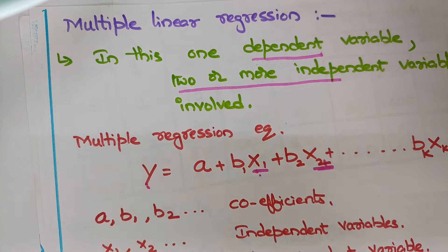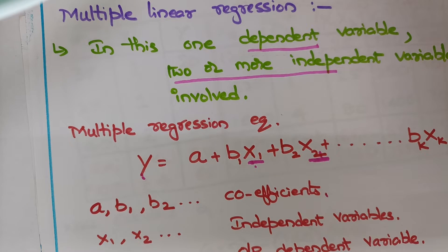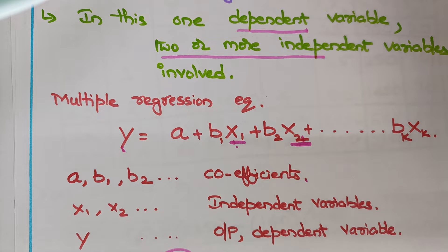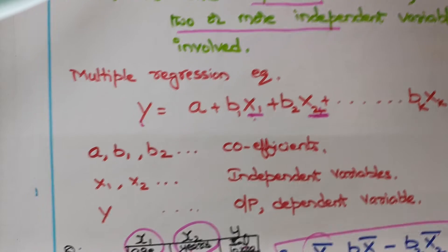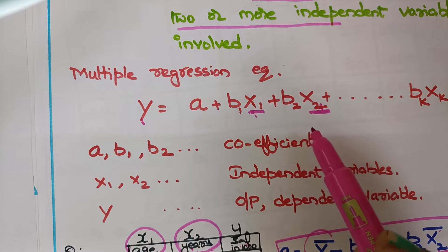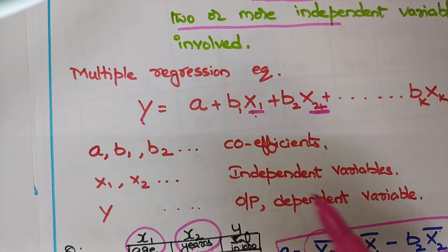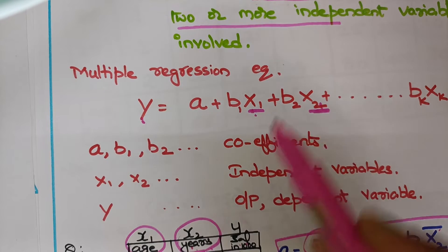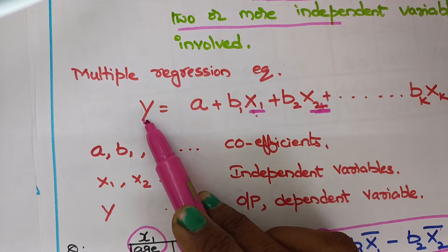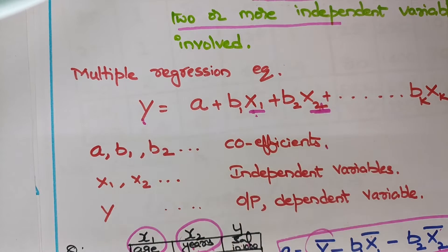Multiple linear regression has one dependent variable and two or more independent variables involved. The multiple regression equation is y equals a plus b1·x1 plus b2·x2 plus ... bk·xk. Here a, b1, b2 are the coefficients and x1, x2 are the independent variables. Based on x1 and x2, y will be calculated. Here y is the dependent variable.